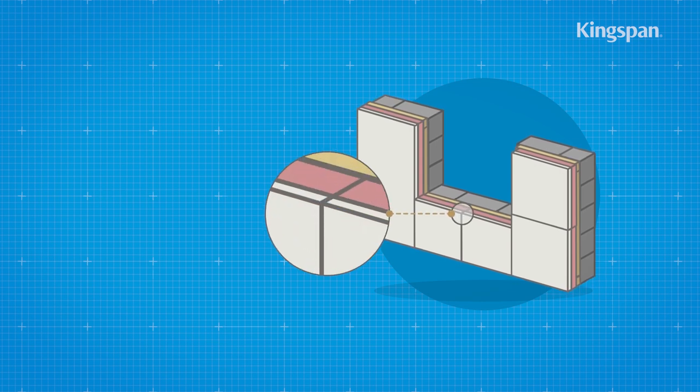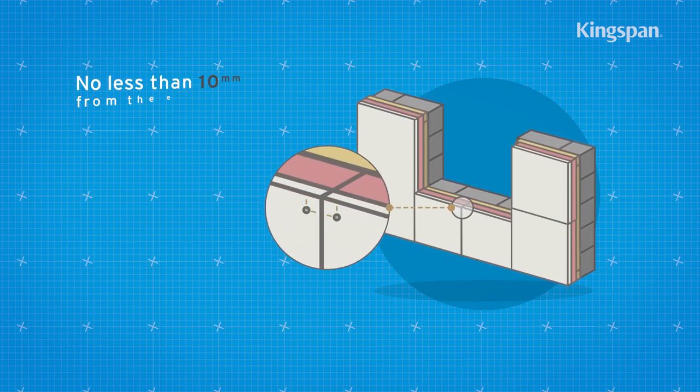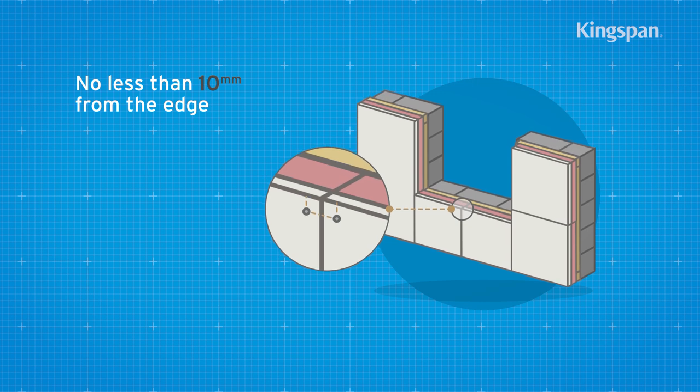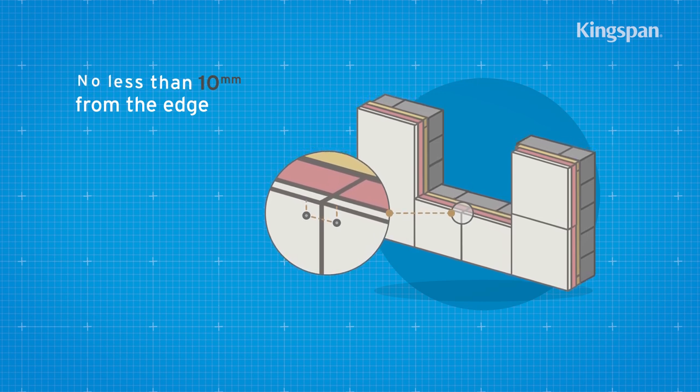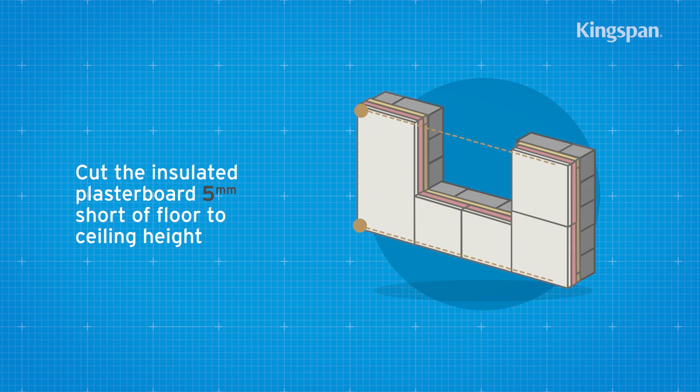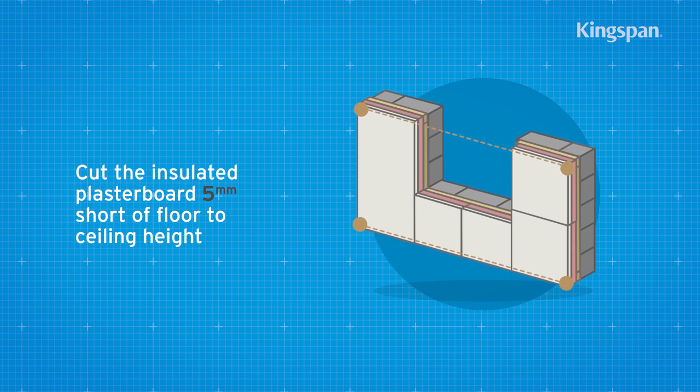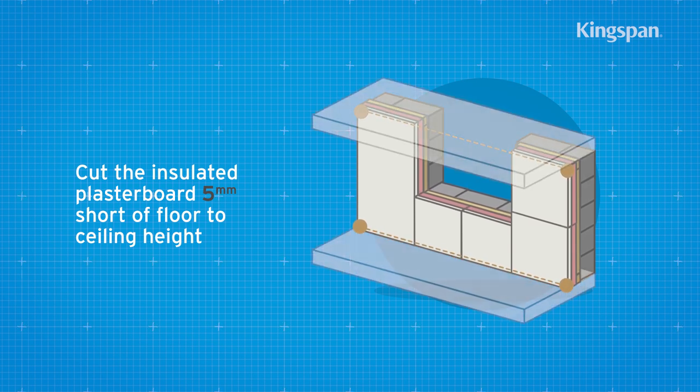Ensure each sheet is lightly butted with fixings located no less than 10mm from the bound edges of the sheet. Cut the insulated plasterboard approximately 5mm short of the floor-to-ceiling height.